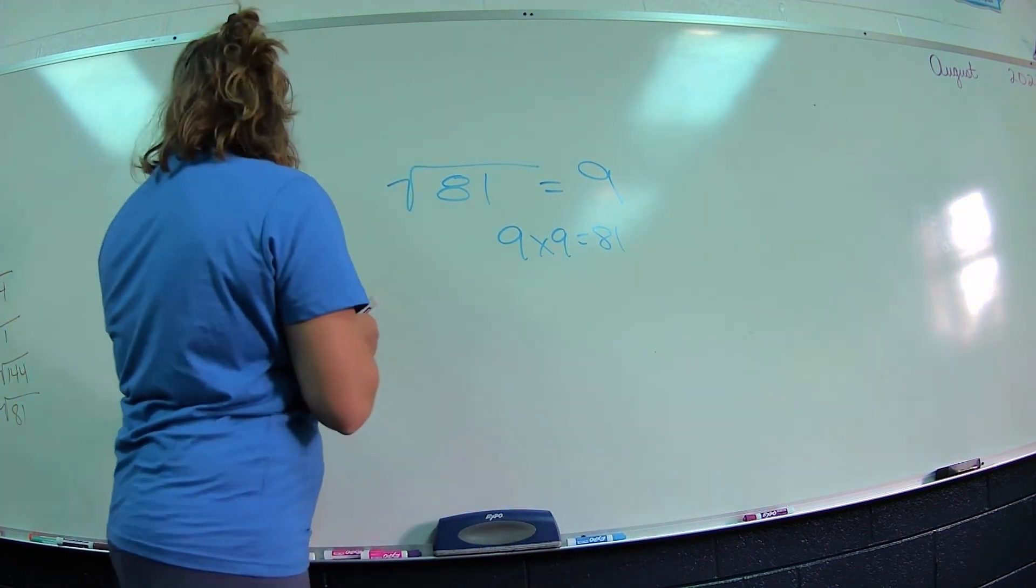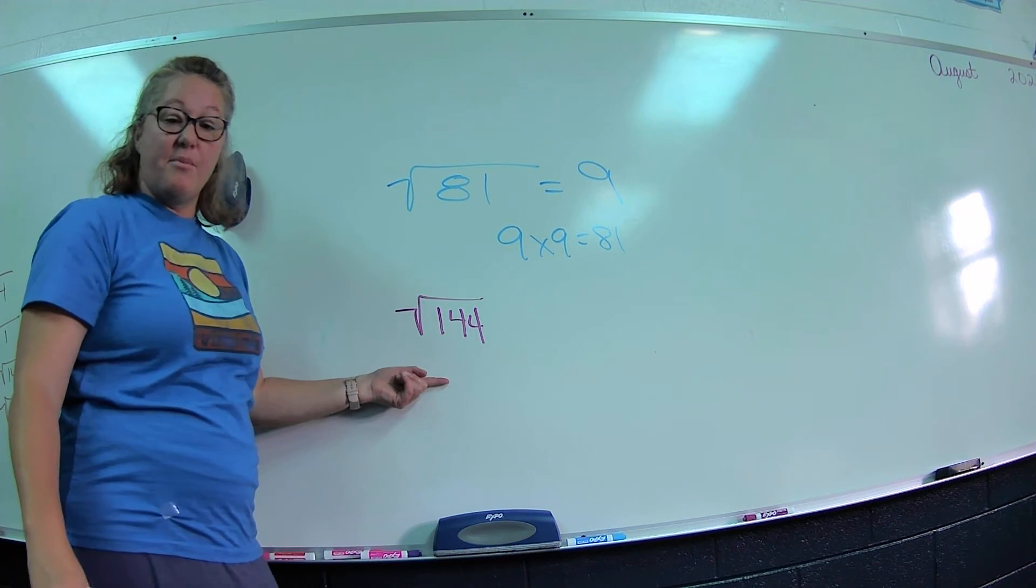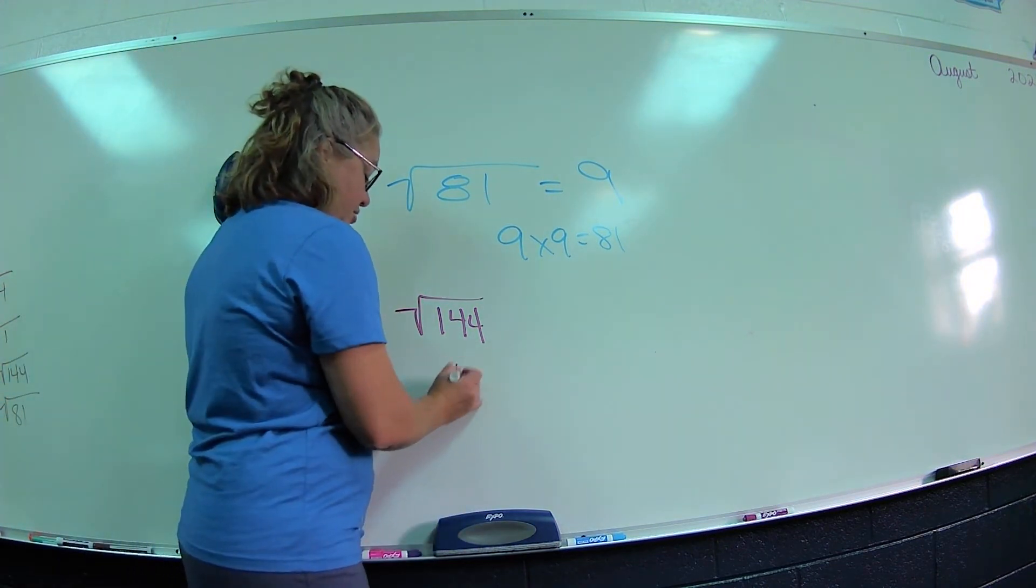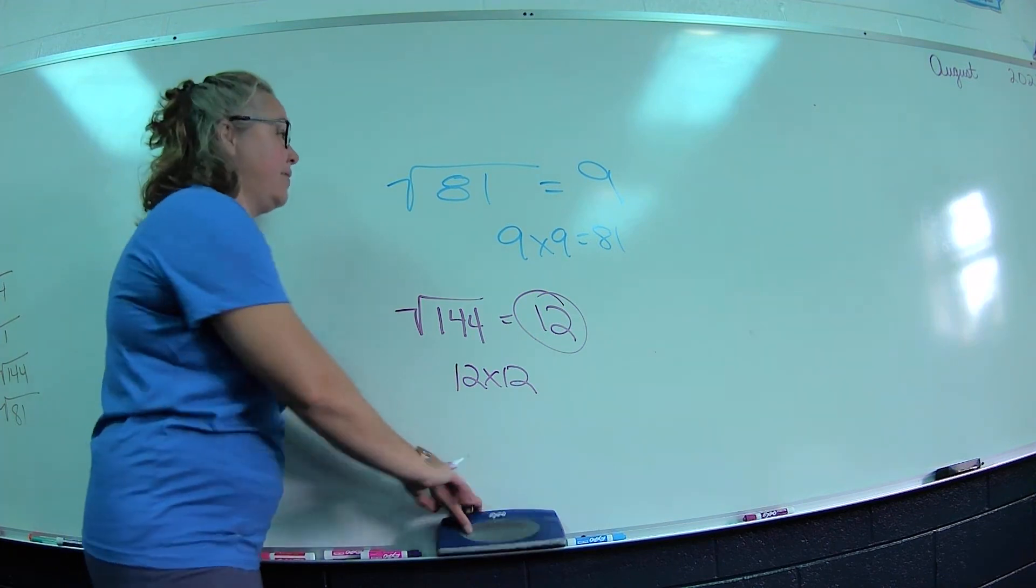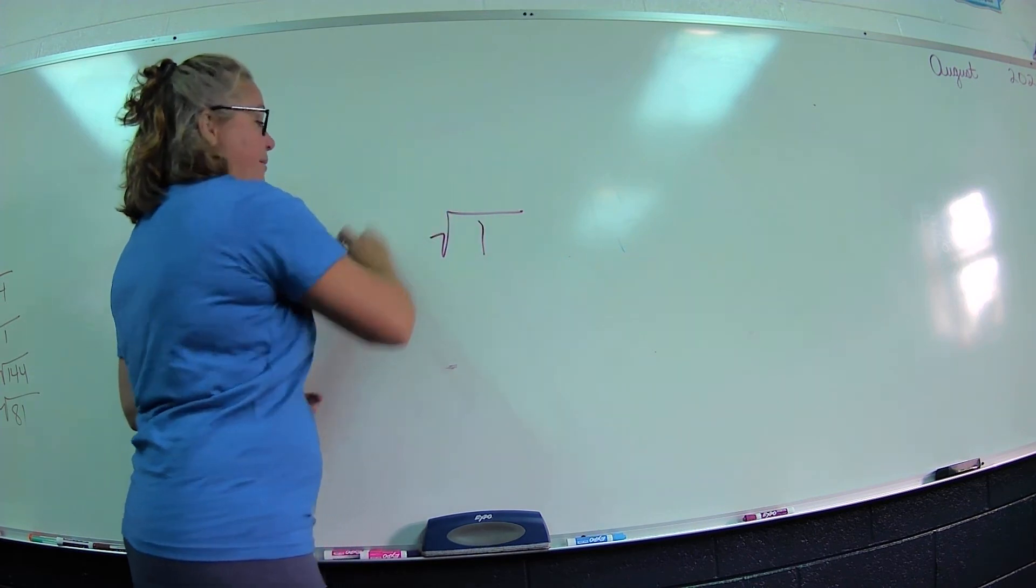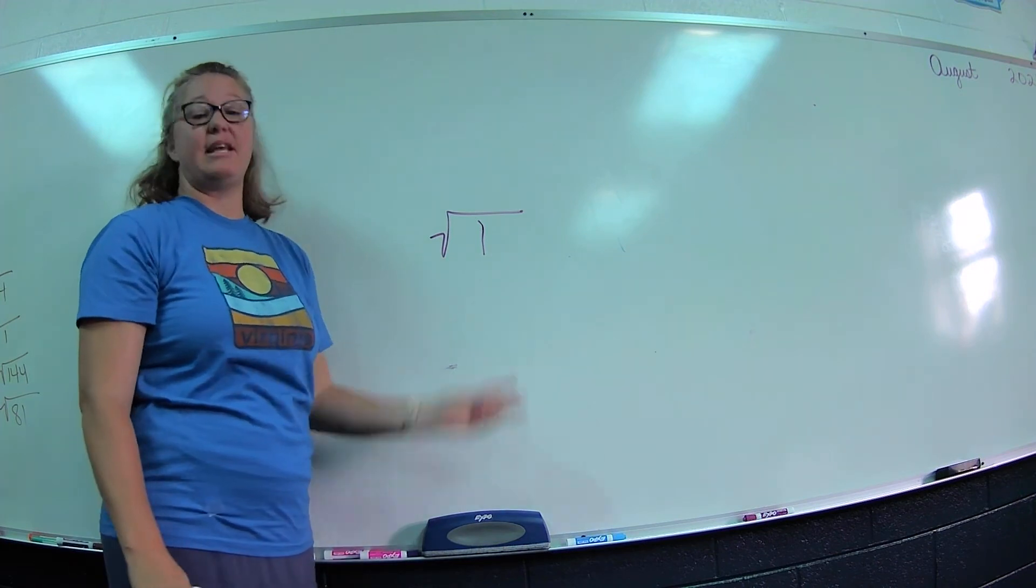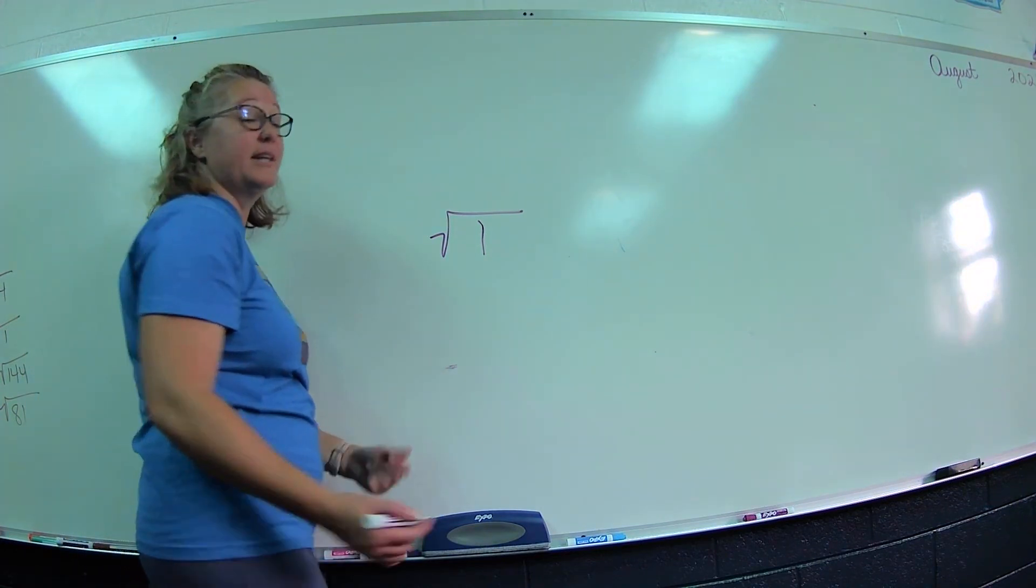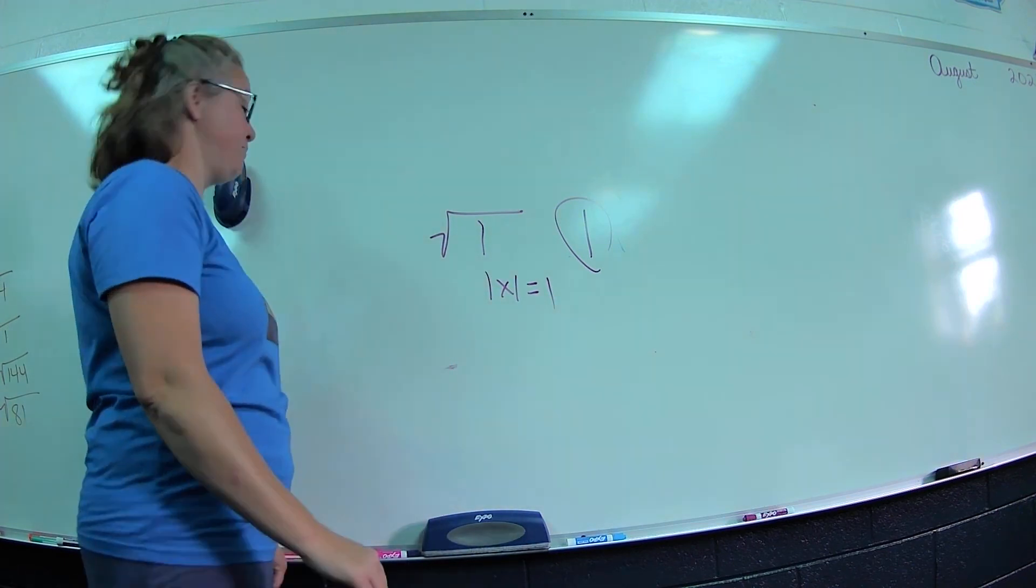What would be the square root of 1? A lot of people kind of think, oh, that's so easy, but then it's the easiest one that a lot of people mess up. But we know anything times 1 is 1, so the square root of 1 is 1 because 1 times 1 is going to give me 1.